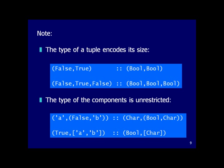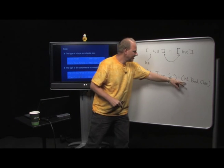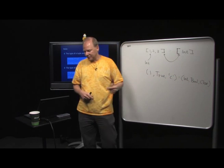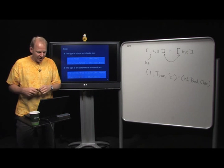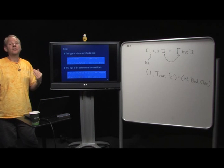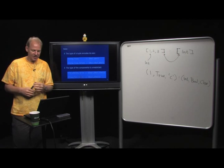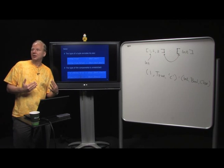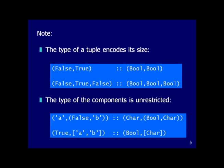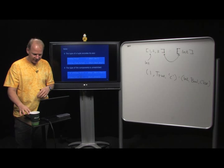The type of a tuple encodes its length. A tuple of three elements has a type with three elements. The elements in the tuple can be of arbitrary type — for example, a tuple `(True, "abc")` has type `(Bool, [Char])`, a bool and a list of characters.